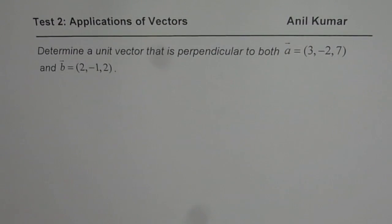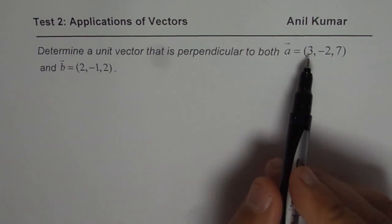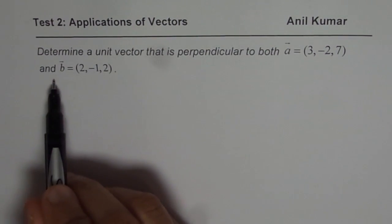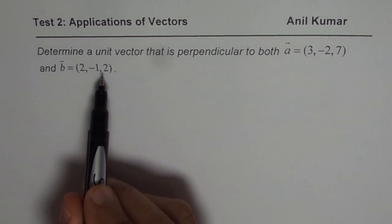The question here is, determine a unit vector that is perpendicular to vector a, which is (3, -2, 7), and b, which is (2, -1, 2).